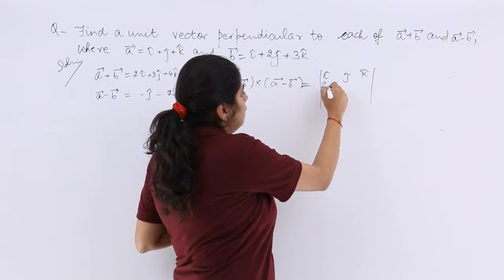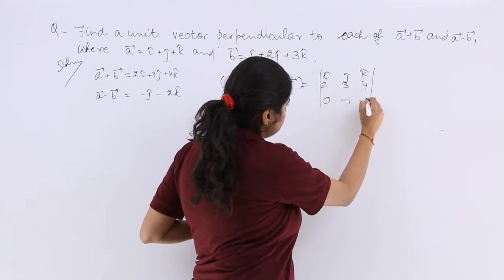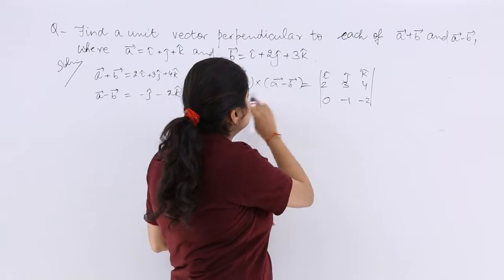It is 2, 3, 4. It is 0, minus 1, minus 2. Now solve this determinant in order to obtain the further answer.